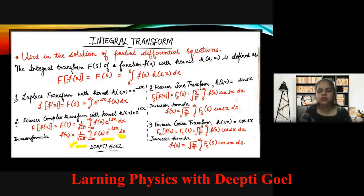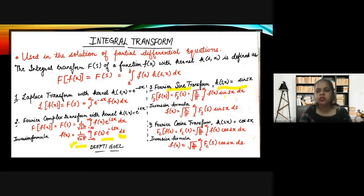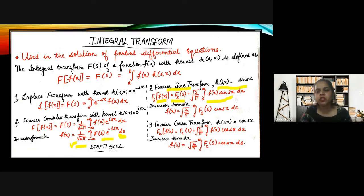Now let us discuss the Fourier sine transform. In the Fourier sine transform the kernel is sine of sx. Since the formula contains the sine term, this transform is regarded as the Fourier sine transform. The transform is Fs(s) equal to root(2/π) integration from 0 to infinity of f(x) sin(sx) dx. The inversion formula gives the function itself as f(x) equal to root(2/π) integration from 0 to infinity of Fs(s) sin(sx) ds, with limits from 0 to infinity.